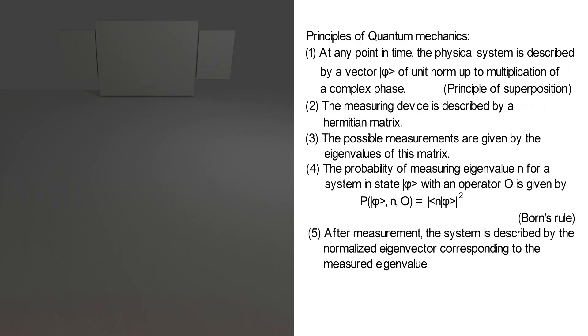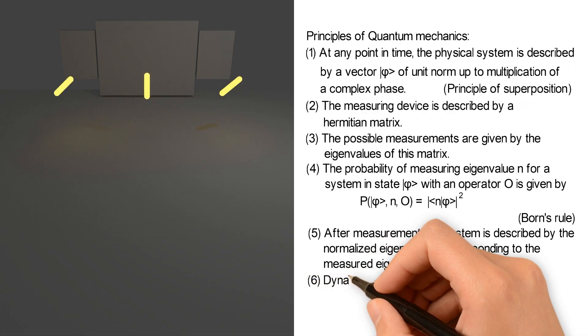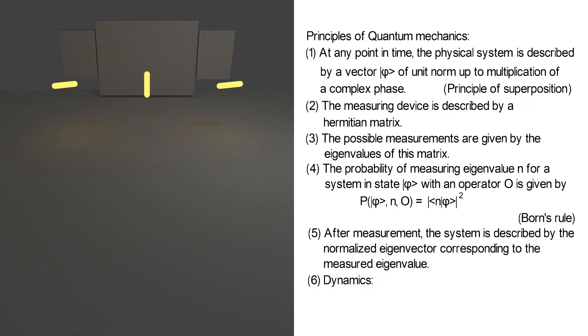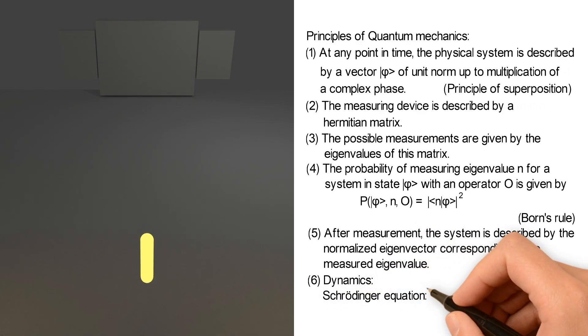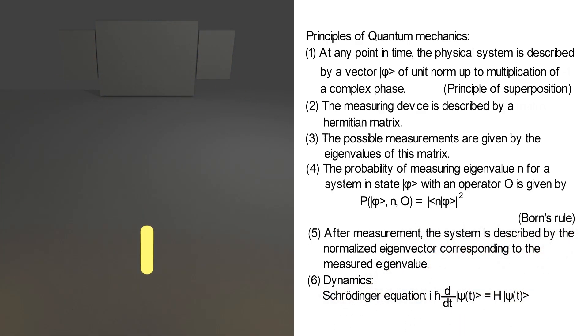And this is the formalism of quantum mechanics. Any quantum system can be described by a state in a complex vector space. The measuring devices are Hermitian operators on this space, and the probability to measure one of the eigenvalues is given by Born's rule. There is one thing we have not yet taken into account, and that's the dynamics of the system. These are determined by the famous equation of Schrödinger, who was one of the founders of quantum mechanics. Or equivalently, the dynamics can also be described by Feynman's path integral approach.